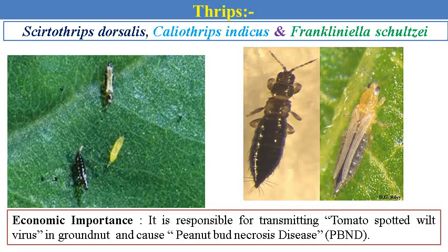Thrips are a major problem. The species include Thrips dorsalis, Thrips tabaci, and Frankliniella schultzei, and even the Scirtothrips dorsalis. It is a major pest as it transmits the tomato spotted wilt virus disease in groundnut and causes peanut bud necrosis disease via the thrips vector.